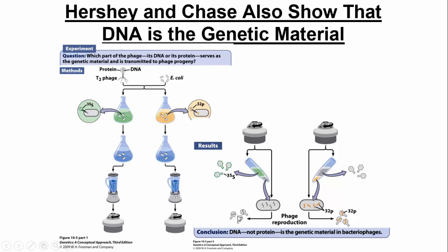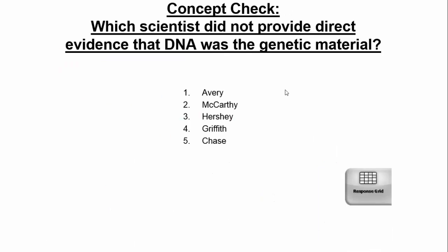In the sulfur experiment, the radioactive sulfur remained in the supernatant — not in the pellet. The protein coats were blended off the bacteria, and the viral offspring were not radioactive, suggesting that proteins are not the genetic material. In the phosphorus experiment, the radioactive DNA was injected in, so the bacterial pellet was radioactive; the supernatant was not. The next generation of viral offspring were also radioactive, showing that DNA was the genetic material. Of these scientists, Griffith did not provide direct evidence that DNA was the genetic material — he showed transformation but didn't show it was DNA.